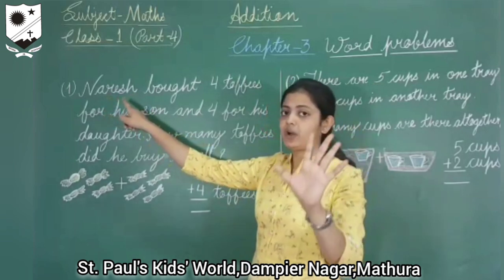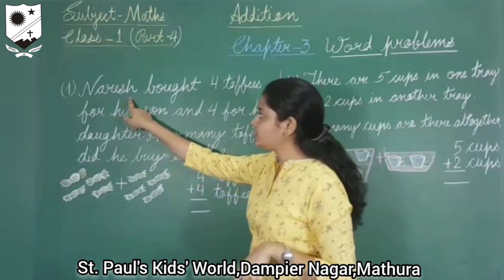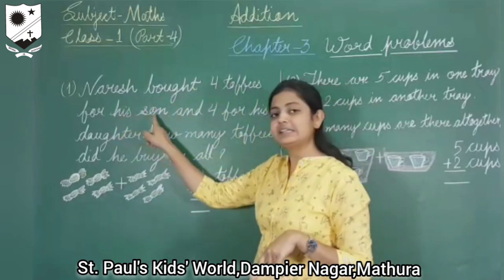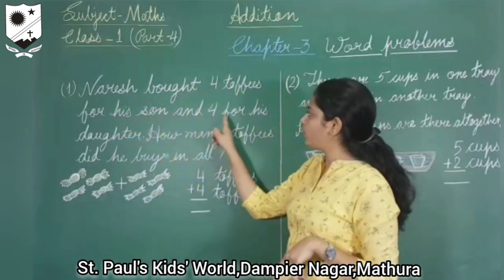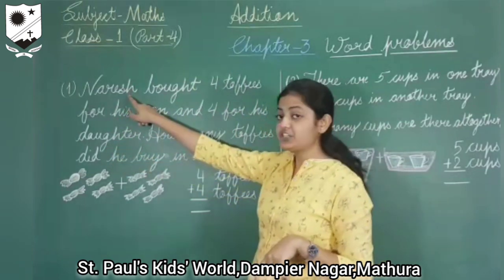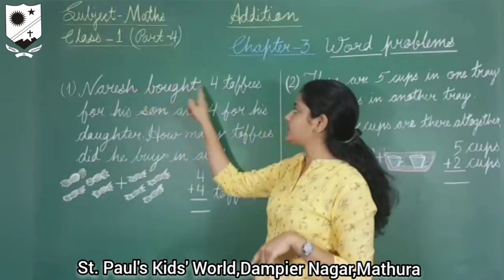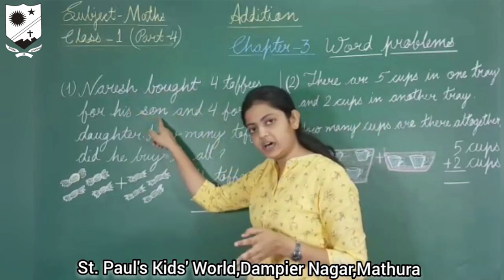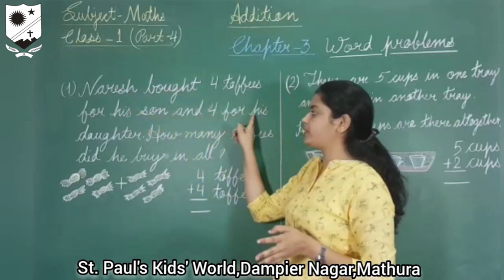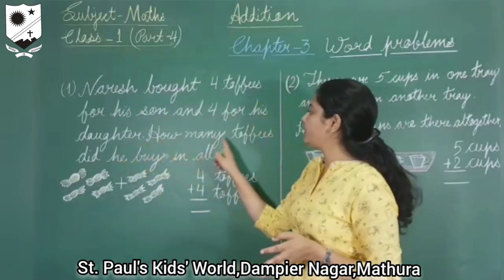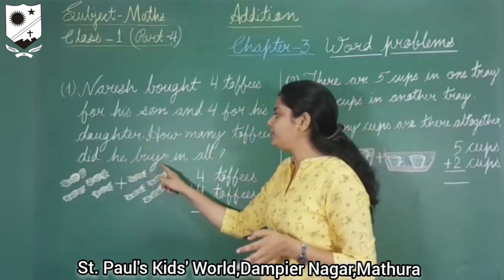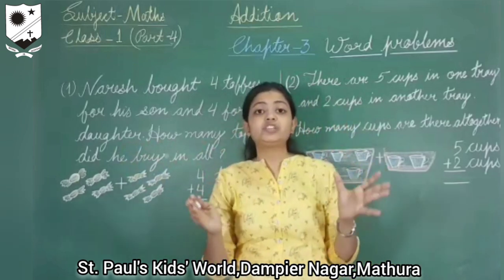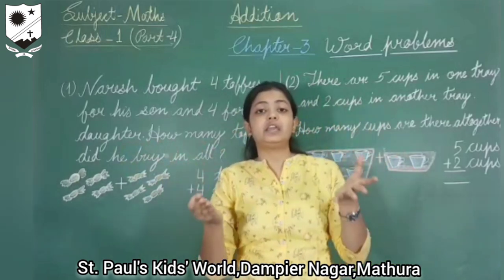Read out the problem with me: Naresh bought 4 toffees for his son and 4 for his daughter. Naresh is a man who bought 4 toffees for his son and 4 toffees for his daughter. Now, how many toffees did he buy in all?